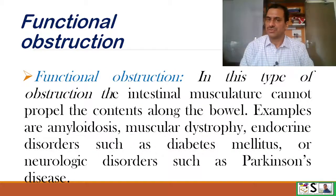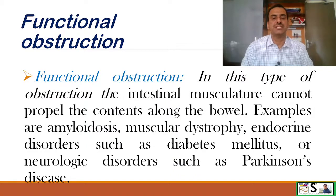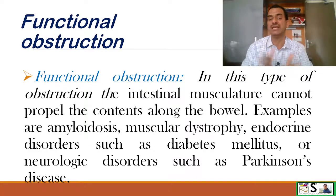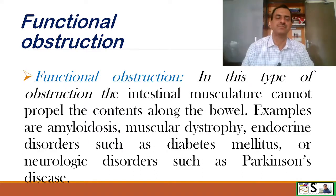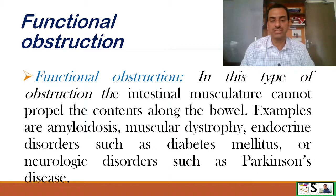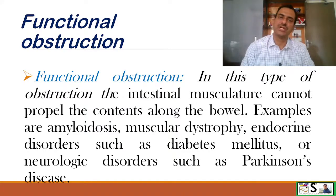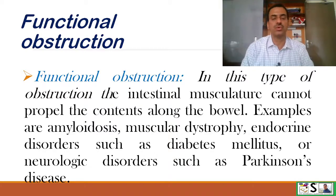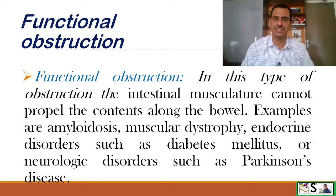Functional obstruction: In this type of obstruction, the intestinal musculature or muscles cannot propel the contents along the bowel or intestine. Examples are amyloidosis, muscular dystrophy, endocrine disorders such as diabetes mellitus, or neurological disorders such as Parkinson's disease.